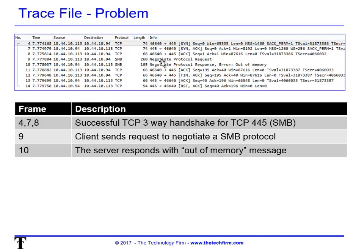So now we get packets 9 and 10. Packet 9 is trying to negotiate the protocol — the protocol being a language. And like all languages, you have a dialect, so he's trying to pick a dialect. And in packet 10, the server comes back and says out of memory. So things don't work after that.